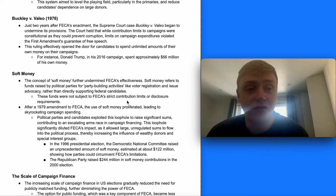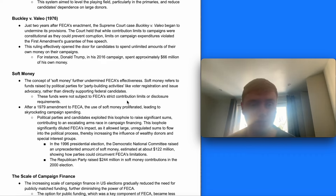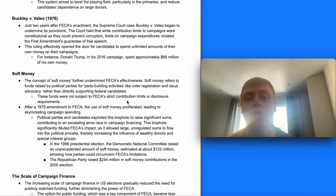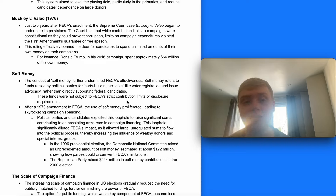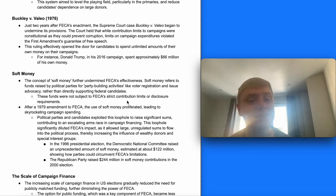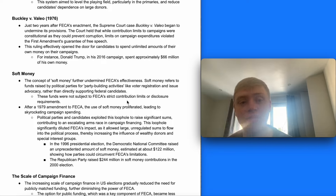The first key court case is Buckley v. Valeo. Just two years after the FECA's enactment, the Supreme Court case Buckley v. Valeo began to undermine its provisions. The court held that while contribution limits to campaigns were constitutional as they could prevent corruption, limits on campaign expenditures violated the First Amendment's guarantee of free speech. This effectively opened the door for candidates to spend unlimited amounts of their own money on their campaigns — for instance, Donald Trump in his 2016 campaign spent approximately $66 million of his own money.